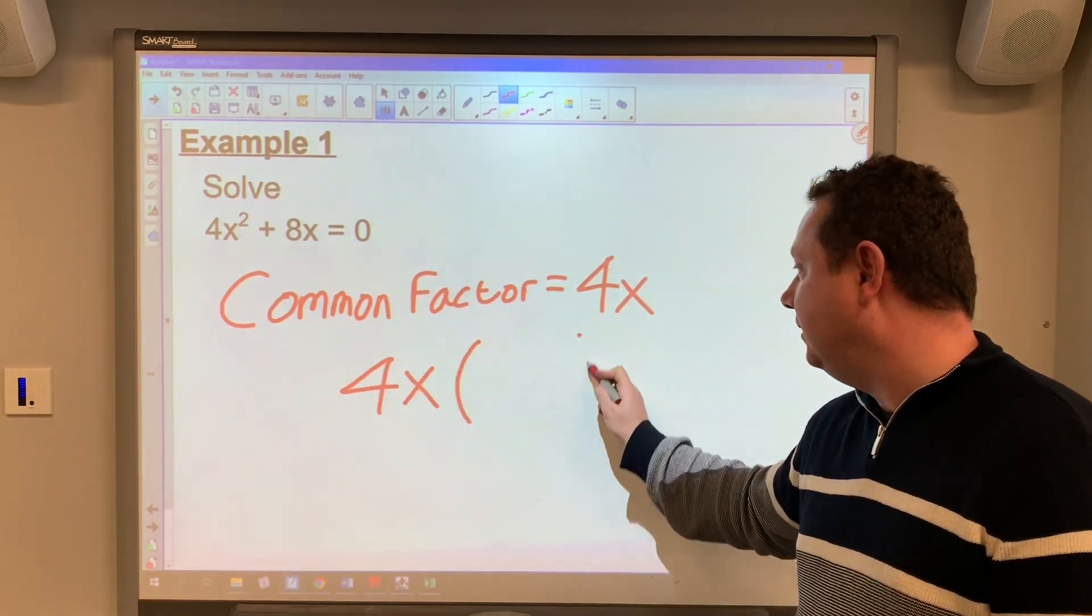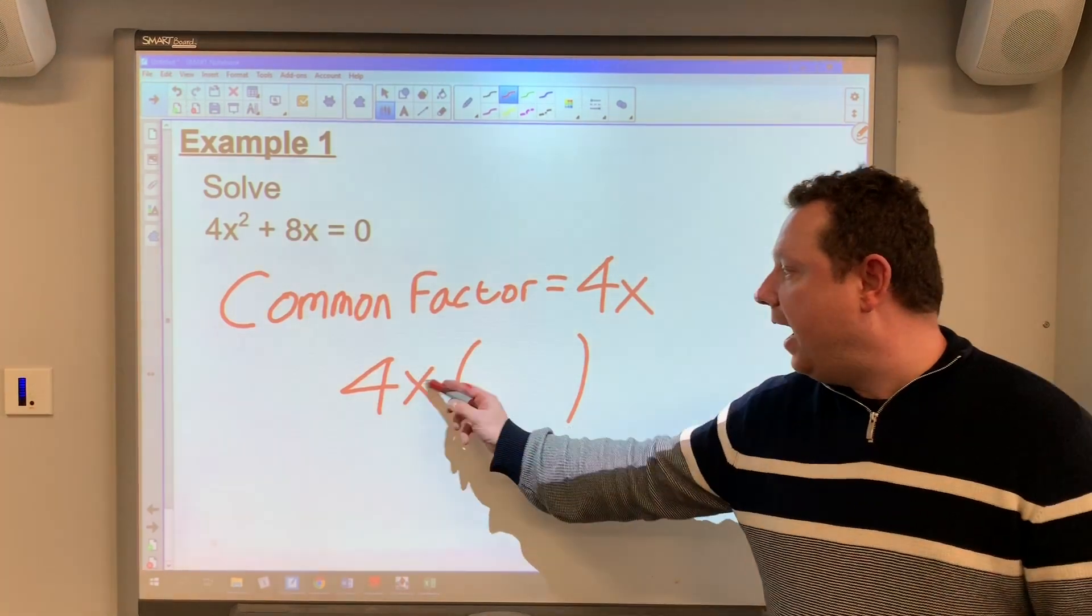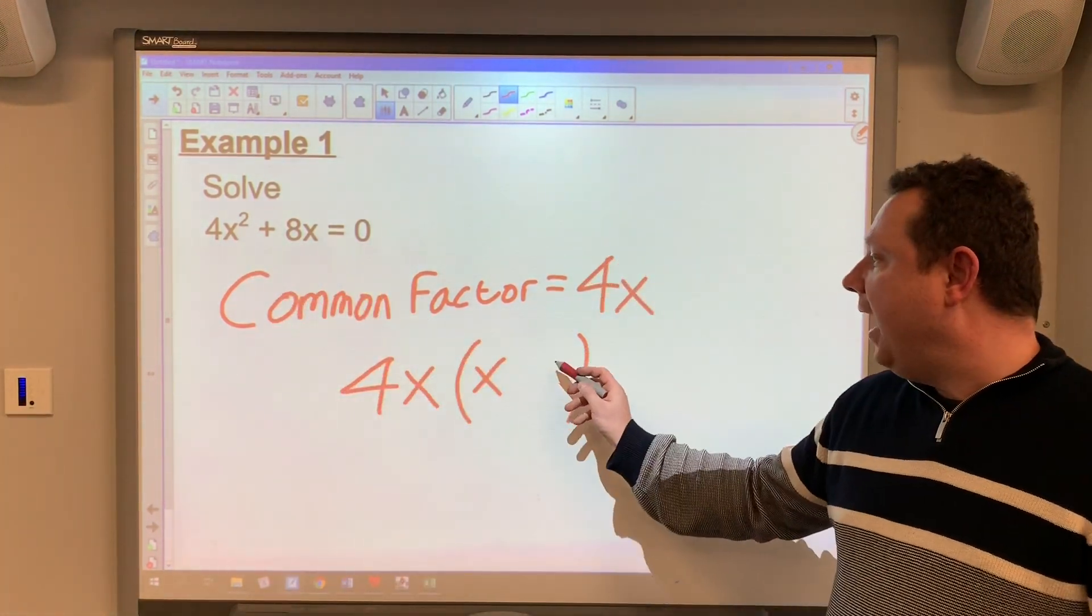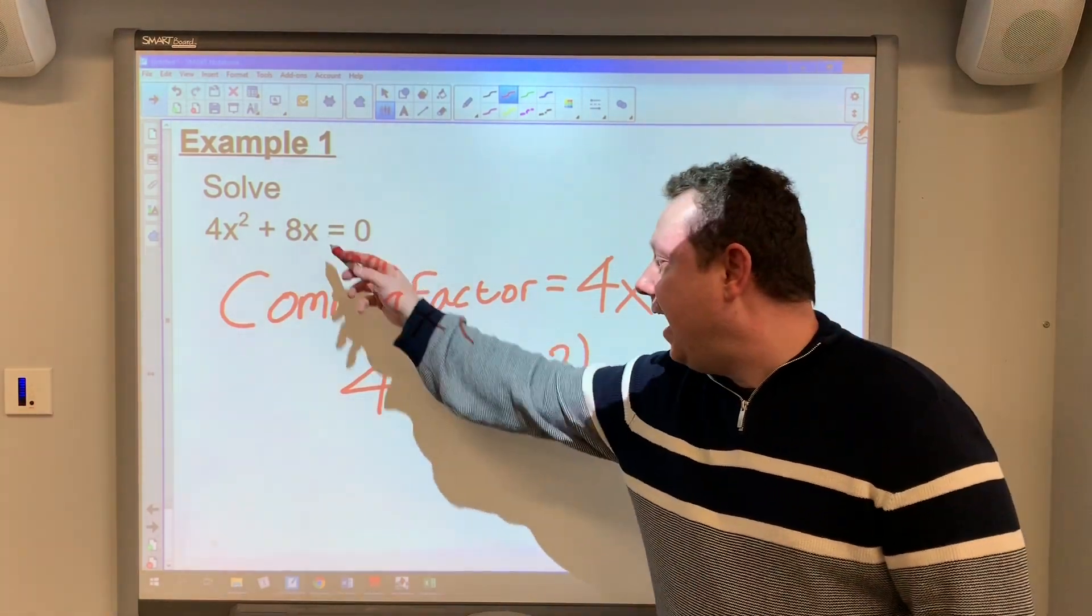So 4x goes outside the brackets. I open a bracket. It's a single bracket because I've got a common factor. 4x times x gives me 4x². 4x times 2 gives me 8x.